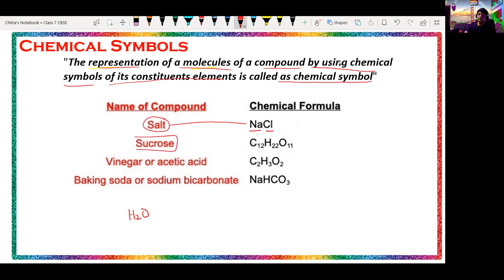Then we have sucrose — the sugar you have at home. Its molecular formula is C12H22O11. We also have vinegar, also called acetic acid, and its formula is C2H3O2.